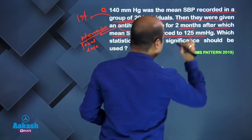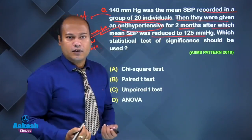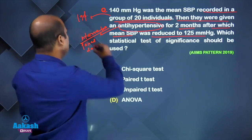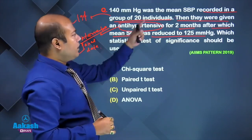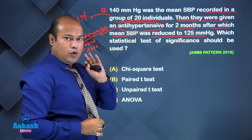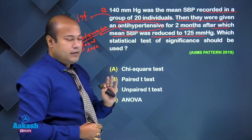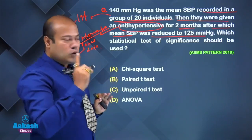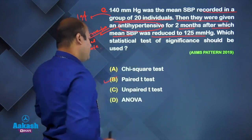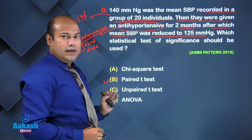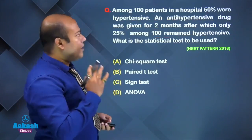They were given an anti-hypertensive for two months, after which the mean systolic blood pressure was reduced to 125 mmHg. One group, paired data, and quantitative data — so the answer will be the paired student t-test.